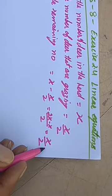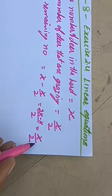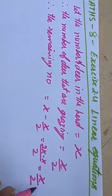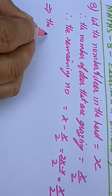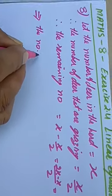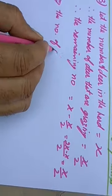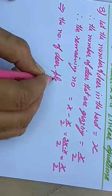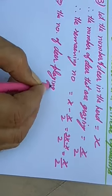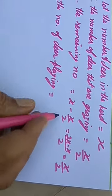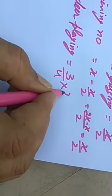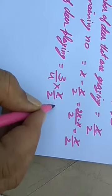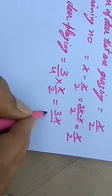And three-fourths of this remaining number are playing. This implies the number of deer that are playing is equal to three-fourths of the remaining, which gives us 3X upon eight.